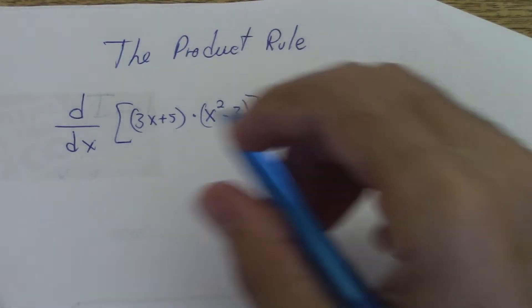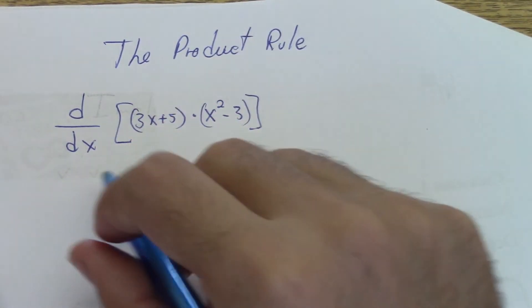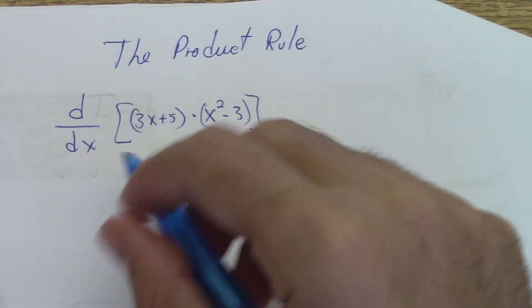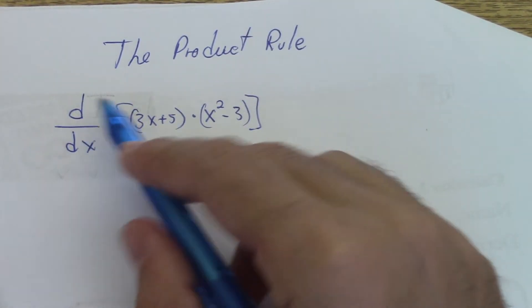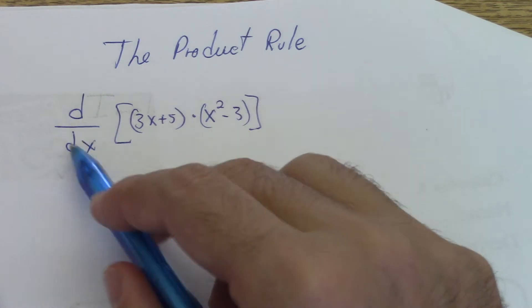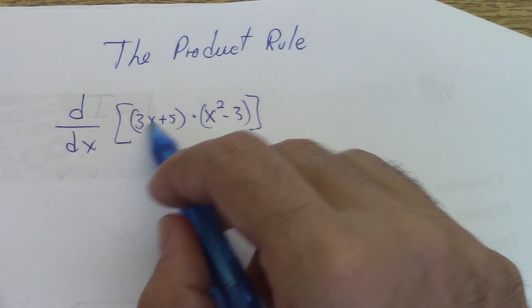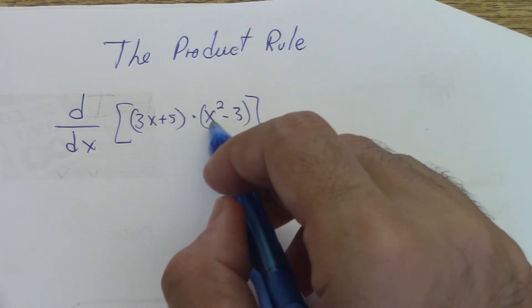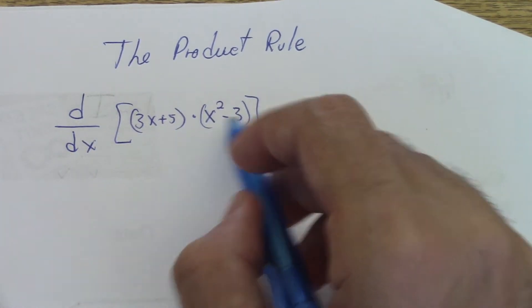Let's see some examples of the product rule. We find the derivative d/dx of (3x + 5) times (x squared minus 3).